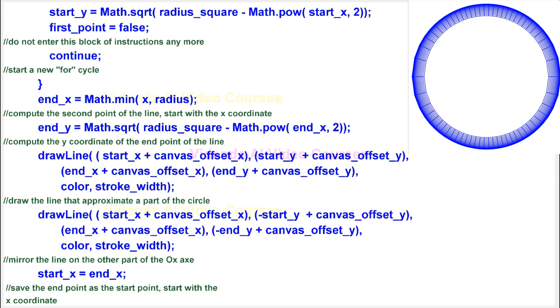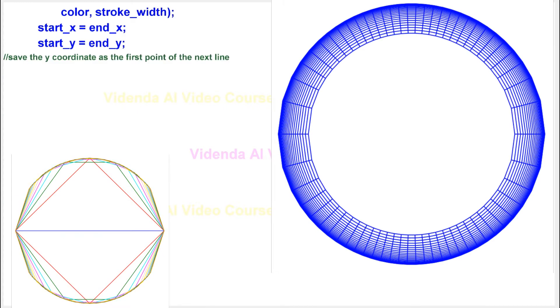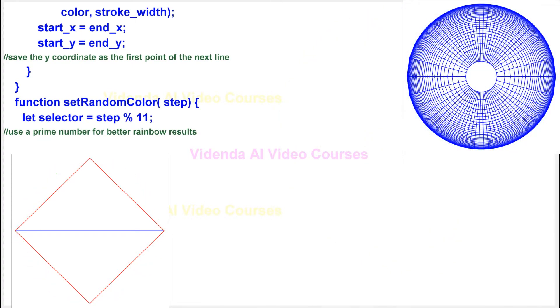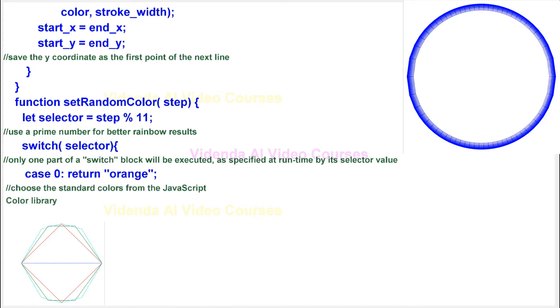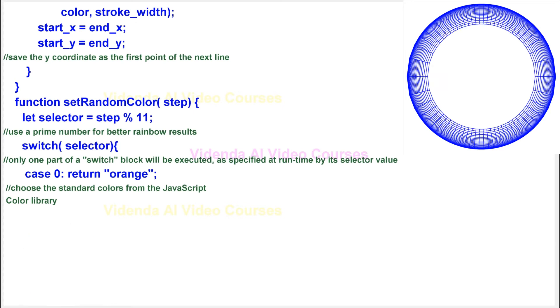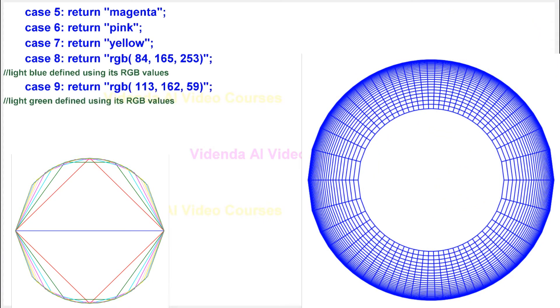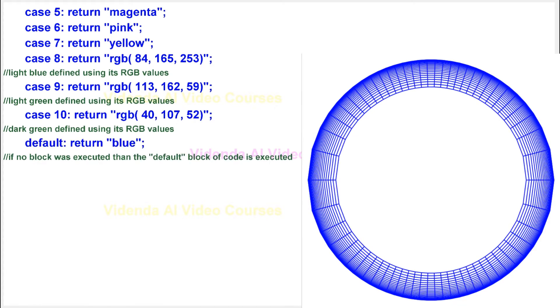Save the end point as the start point. Start with the x-coordinate. Save the y-coordinate as the first point of the next line. Use a prime number for better rainbow results. Only one part of a switch block will be executed, as specified at runtime by its selector value. Choose the standard colors from the javascript color library. Light blue defined using its RGB values. Light green defined using its RGB values. Dark green defined using its RGB values. If no block was executed then the default block of code is executed.